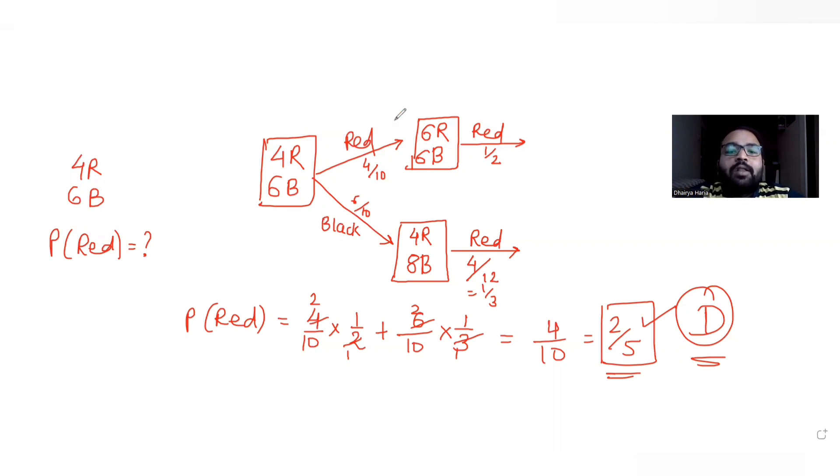But you need to understand the conditions which are placed in the question, that says if the first ball in the first case is red or black, it is again placed back in the box with two additional same colored balls. That was the only difficult thing in the question. Apart from that it was a very easy question. I'll meet you again tomorrow with the next question. Till then you can like, share, and subscribe.